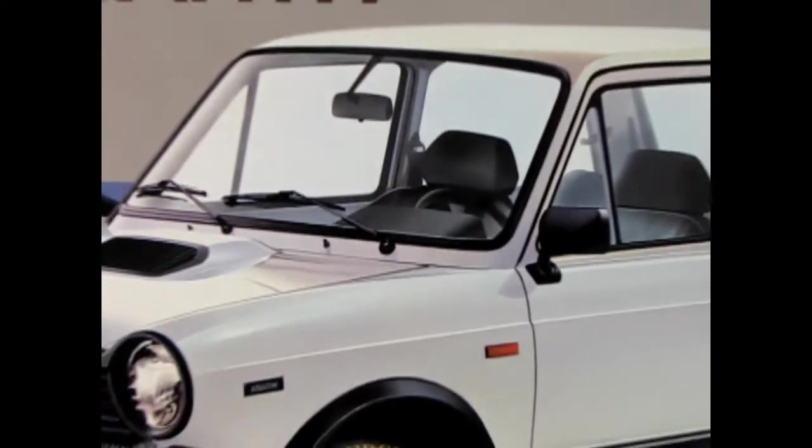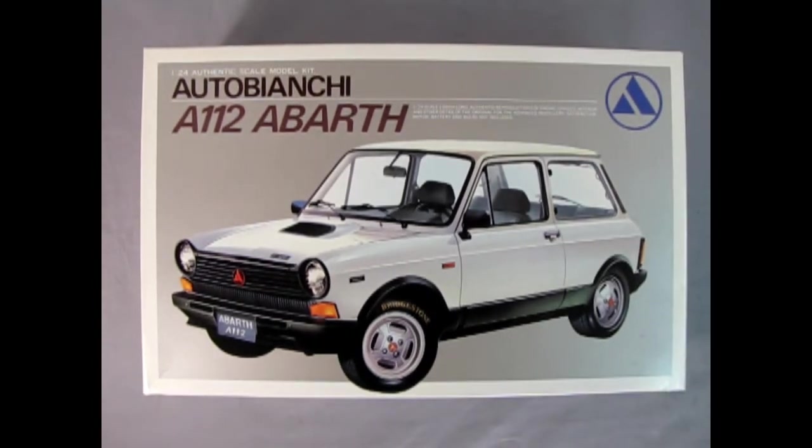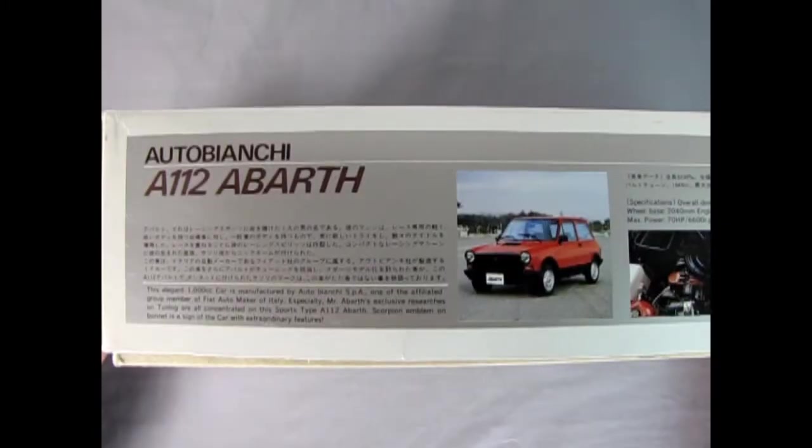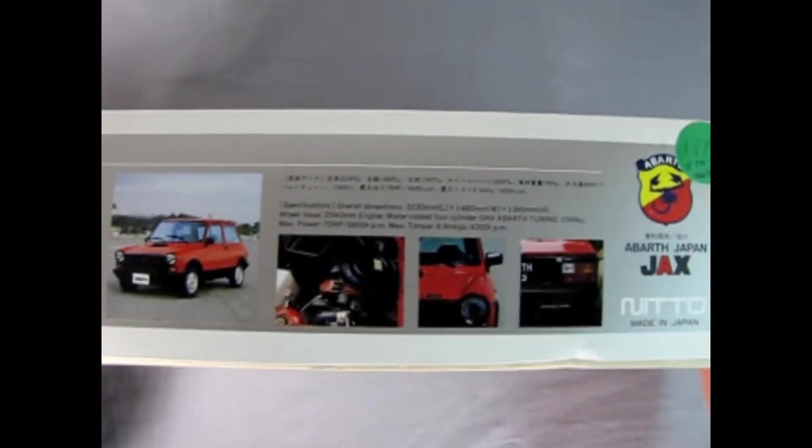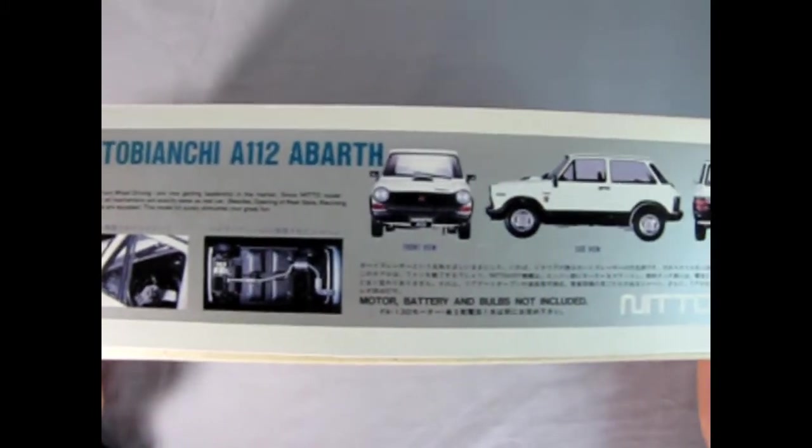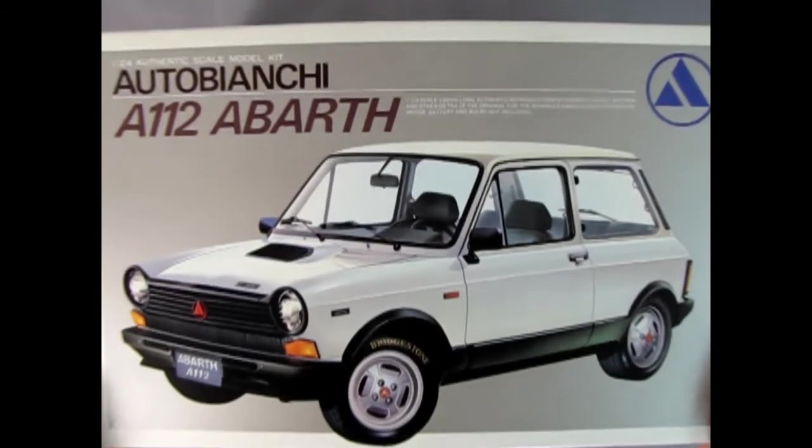Now we begin our series of 1979 unboxing videos with this very cool Italian Autobianchi A112 Abarth model kit by Nitto. This model car is authentic 1:24th scale and includes parts to make this a motorized model, although there is no motor in this particular kit. On the side of the box we have pictures of the actual Autobianchi as well as images of our completed model kit in side, front, and back views. Now let's remove the lid and see what's inside the box.